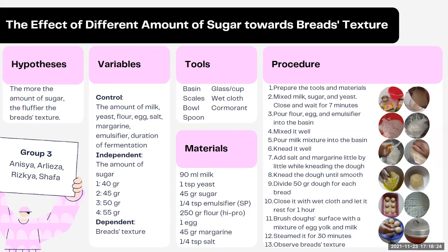The tools needed for making the bread consist of a basin, scales, bowl, spoon, cup, wet cloth, and a mold. For the materials: milk 90 milliliters, 1 teaspoon of yeast, 45 grams of sugar, 1 quarter teaspoon of emulsifier or SP, 250 grams of high-protein flour, 1 egg, 45 grams of margarine, and 1 quarter teaspoon of salt.